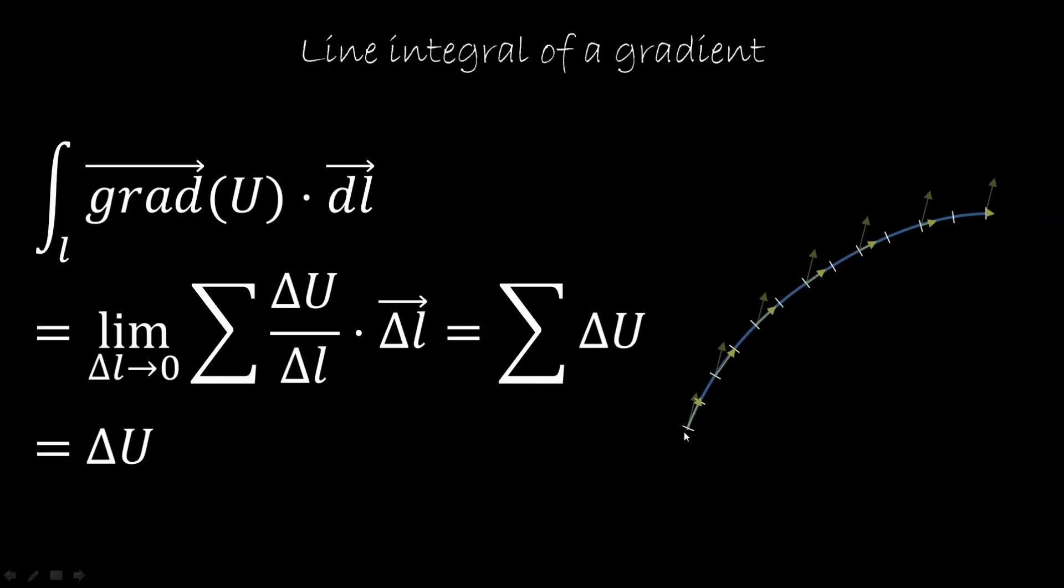So again, like before, we chop up the line in lots of little pieces, we take the component of the gradient along that line, but the component of the gradient along that line is just the change along that line divided by the distance of the line. So it's this quantity. But in the line integral, what we are doing is multiplying this quantity by the length of the line. So what happens is that these two parts simplify, so we're left with summing all the differences in each segment.